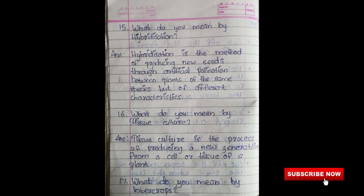Fifteenth question: What do you mean by hybridization? Answer: Hybridization is the method of producing new seeds through artificial pollination between plants of the same species but of different characteristics. Sixteenth question: What do you mean by tissue culture? Answer: Tissue culture is the process of producing a new generation from a cell or tissue of a plant.